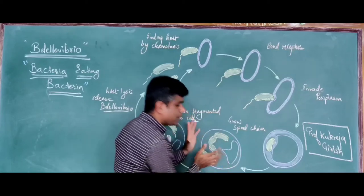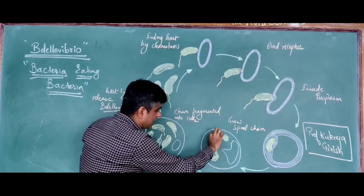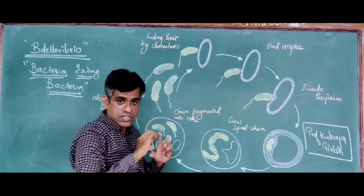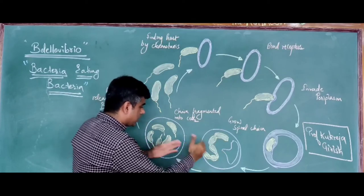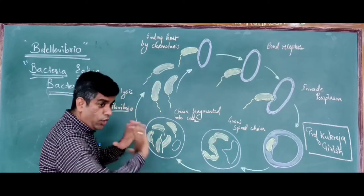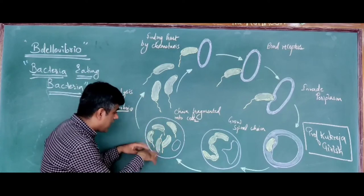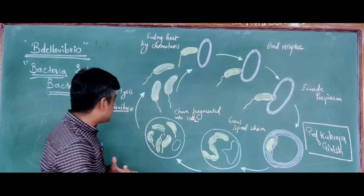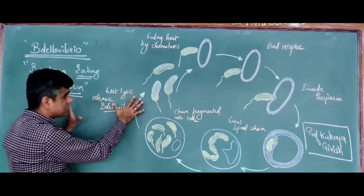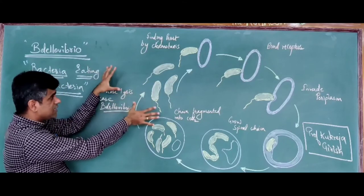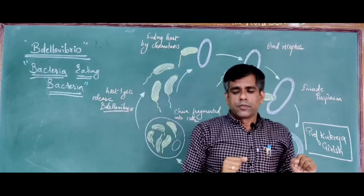Once the nutrients of the host are consumed, the spiral chain undergoes septation, forming septate cells. Once all nutrients are exhausted, these develop into independent cells which now have flagella. With the help of enzymes, they lyse the host cell. After the host cell lyses, the Bdellovibrio are released and can now attack another host cell.